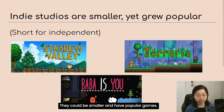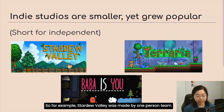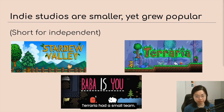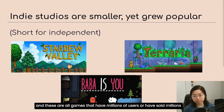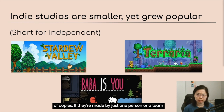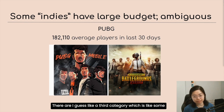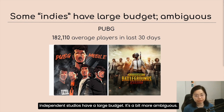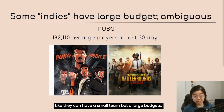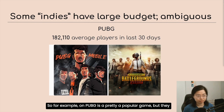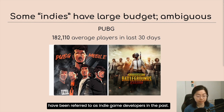Indie studios could be smaller and still have popular games. Stardew Valley was made by a one-person team. Terraria had a small team. Baba Is You is also made primarily by one person. These are all games that have sold millions of copies. If made by just one person or a small team, that could make them multimillionaires. There's also a third category where some independent studios have a larger budget but still a small team — like PUBG, which is a popular game but has been referred to as indie game developers in the past.